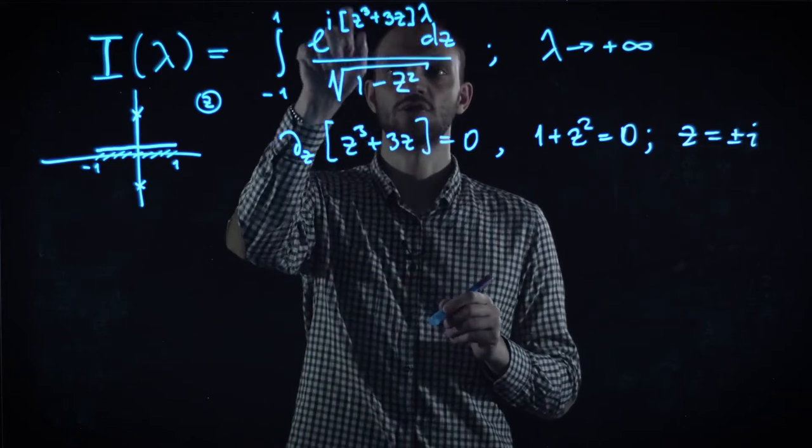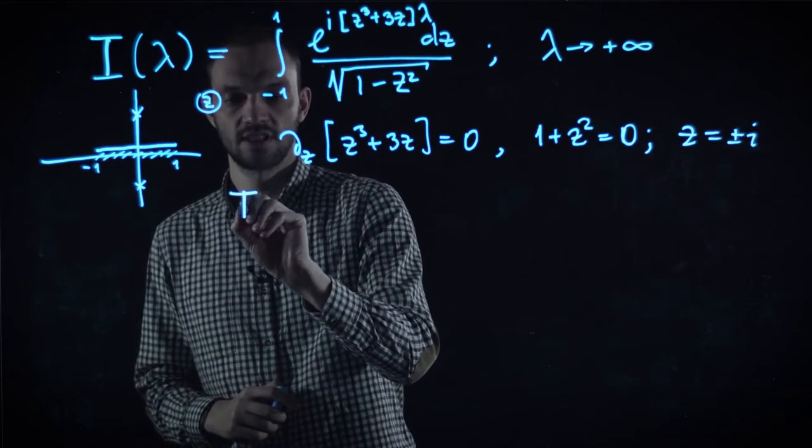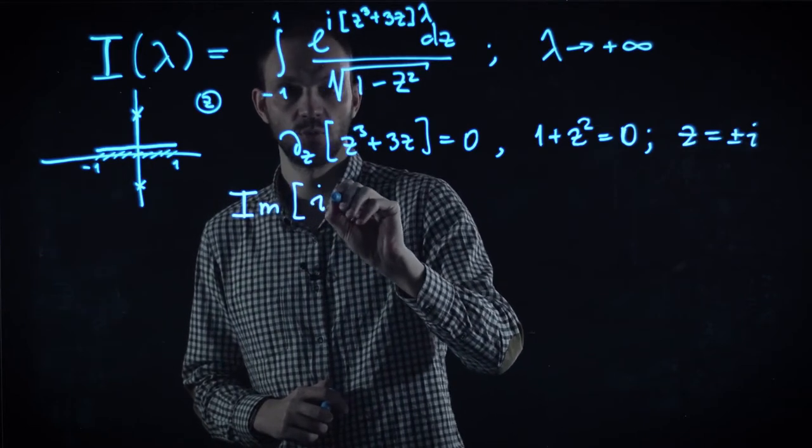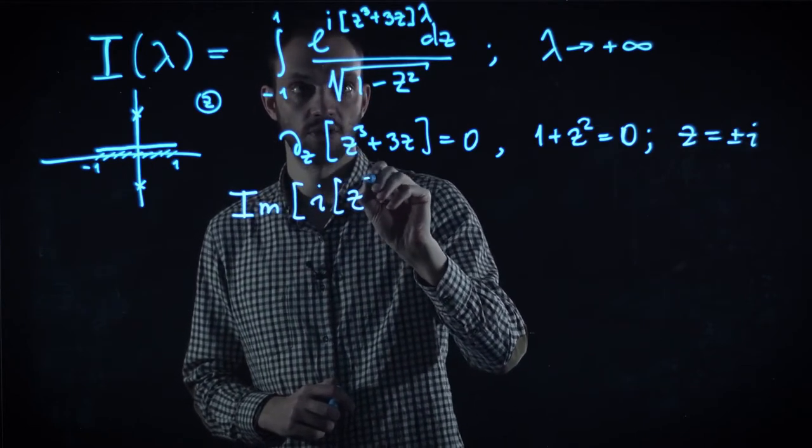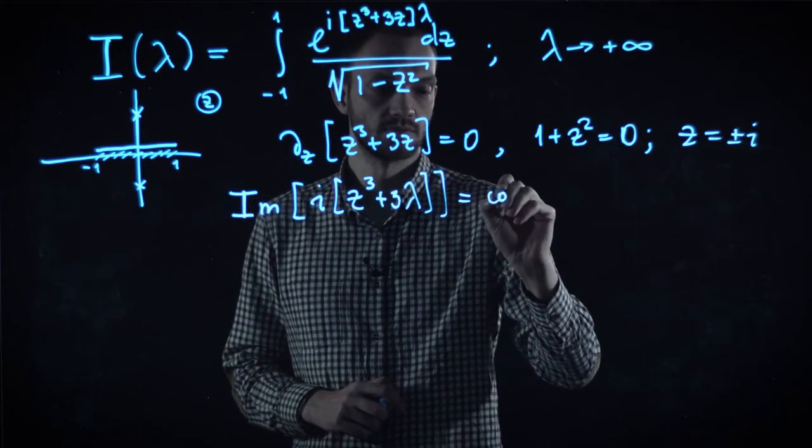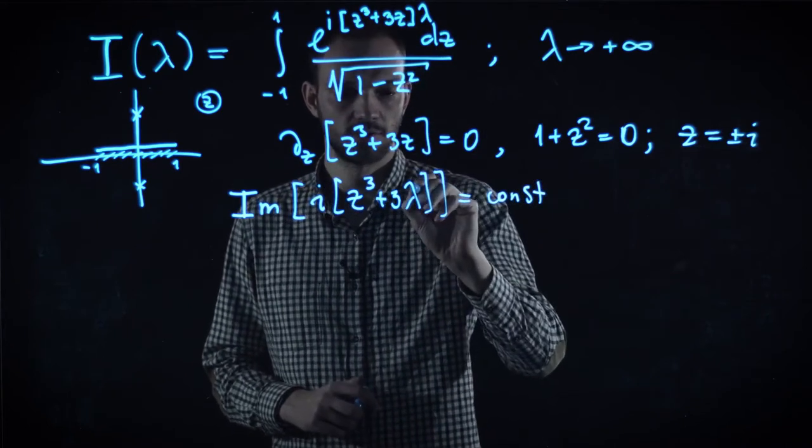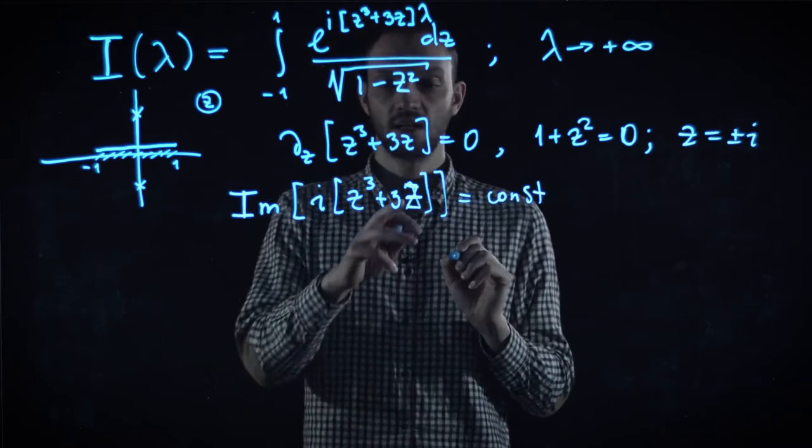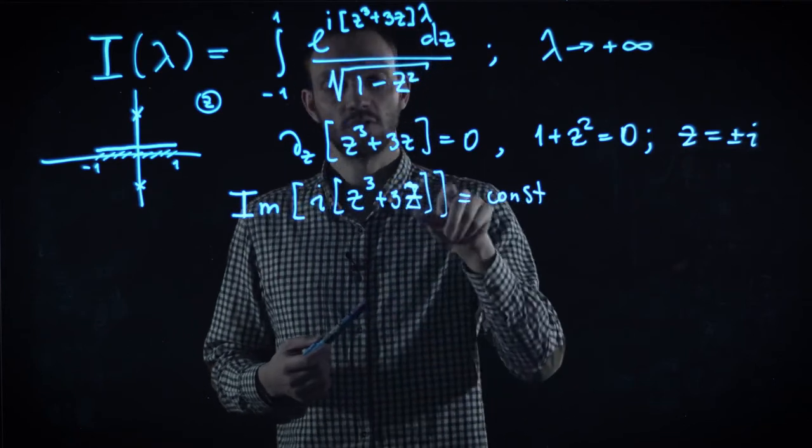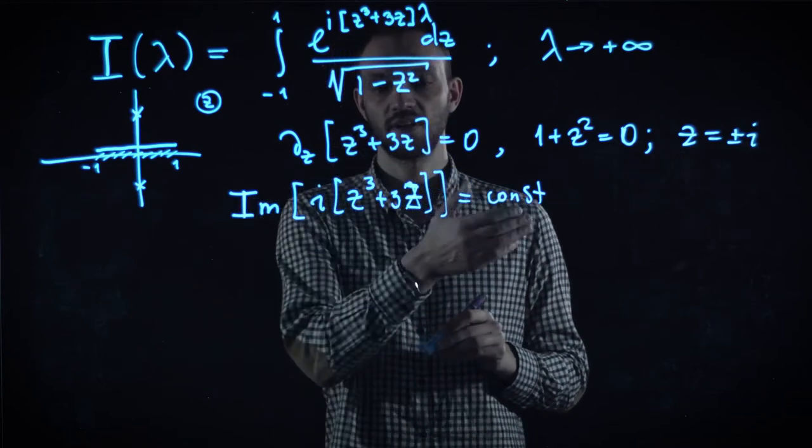And the general rule is such that we need to find all surfaces of the constant imaginary part of the exponential. So, in other words, for this case, we need to find such lines in the complex plane which satisfy the following equation. Imaginary part of z cube plus 3z equal to constant. And of course, lambda is not important for this criteria at all because it has a real part and it doesn't matter. So, this equation defines a set of many curves in the complex plane z.